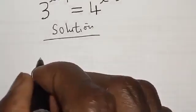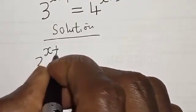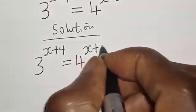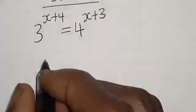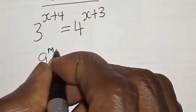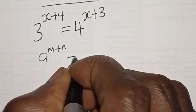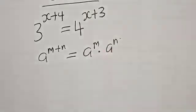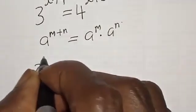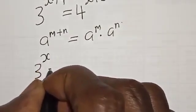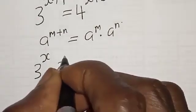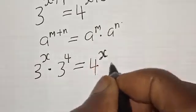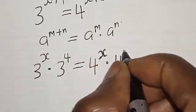We have the given equation: 3 raised to power x plus 4 is equal to 4 raised to power x plus 3. Remember, if you have e raised to power m plus n, it is the same thing as e raised to power m multiplied by e raised to power n. So we have 3 raised to power x multiplied by 3 raised to power 4 is equal to 4 raised to power x multiplied by 4 raised to power 3.